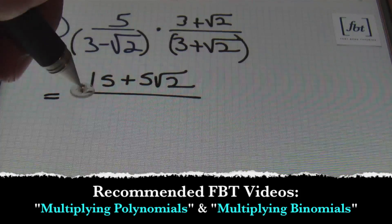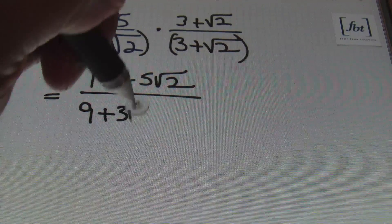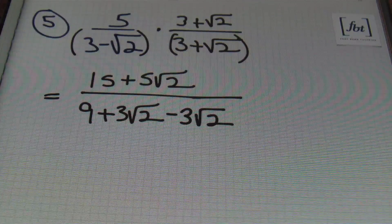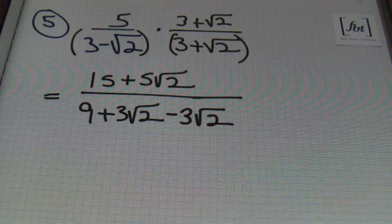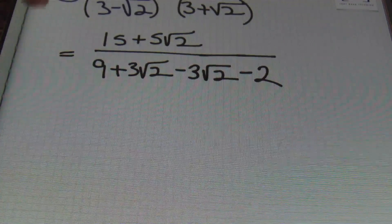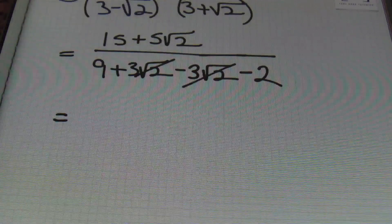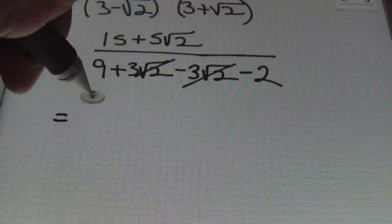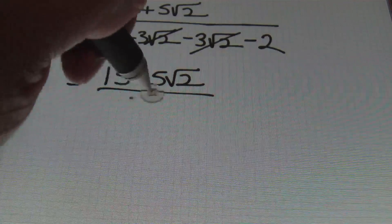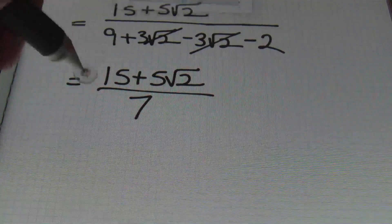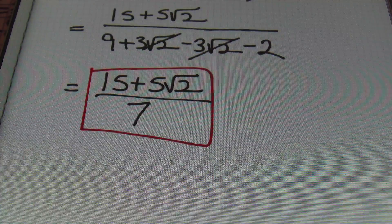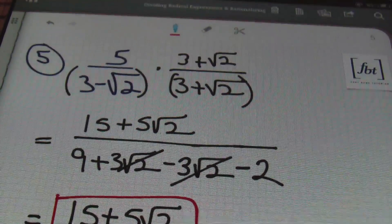We'll need to distribute now. Five times three gives 15, and five times the square root of two gives positive five square root of two in the numerator. In the denominator, foiling the binomials: three times three is nine; three times square root of two is positive three square root of two; negative square root of two times three is negative three square root of two; and negative square root of two times positive square root of two is negative two. The middle terms cancel, leaving nine minus two, which is seven. The final answer is 15 plus five square root of two over seven.